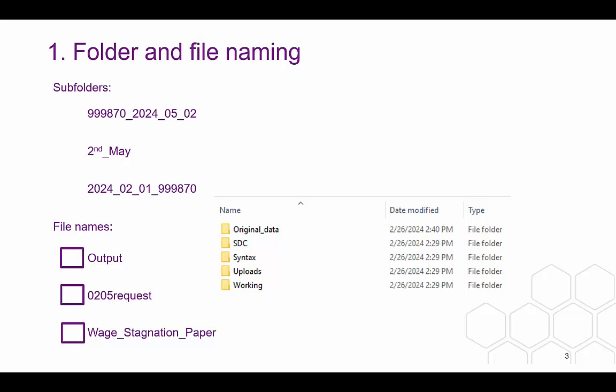When you have an output you'd like to have released from SecureLab, it will need to go through the SDC checking process. You'll place it in the SDC folder and fill in the online form to let us know it's there.